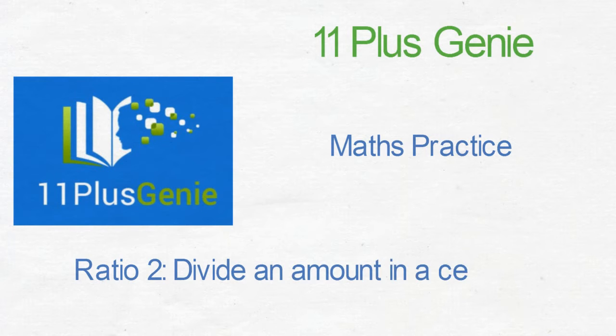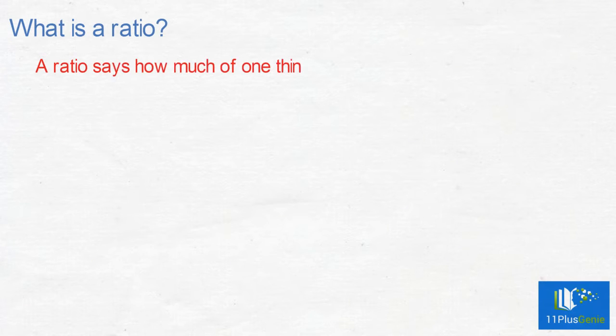Divide an amount according to a certain ratio. What is a ratio? A ratio says how much of one thing there is compared to another thing.